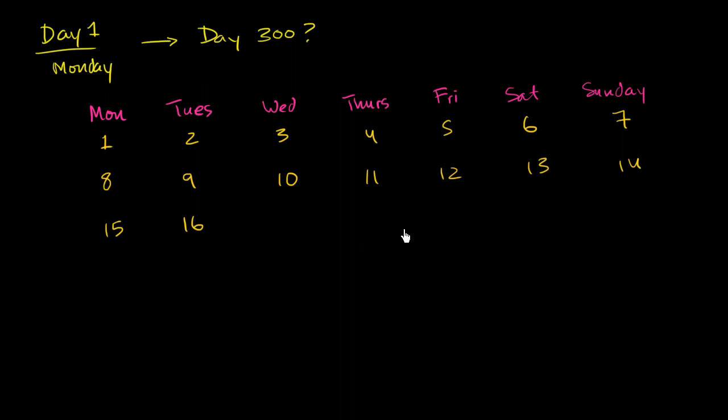This is kind of useful. I could just write it out if I wanted to figure out day 16 or day 20. But this isn't that helpful if I wanted to figure out day 300, or especially day 3,000. So can I come up with some mathematical way of thinking about what day 300 is going to be?